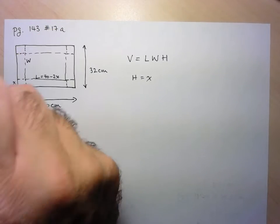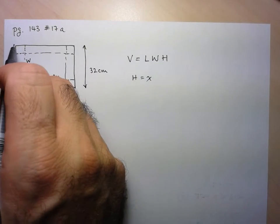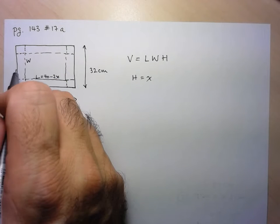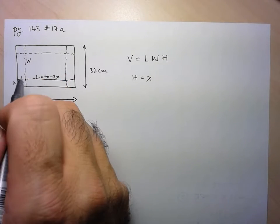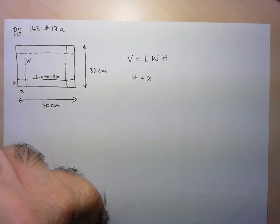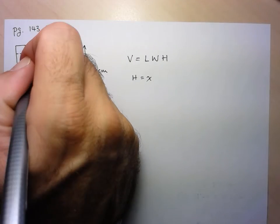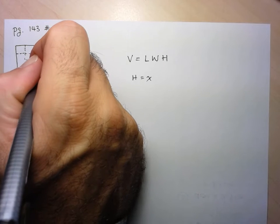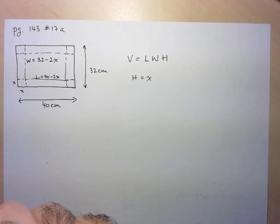And then for the width, which will be here, it's very similar, because I've got the total length of 32 centimeters, and I'm lifting up on either side those tabs of X centimeters each. So my width is just going to be 32 minus 2X. All right, and now I've got enough information to write my model for the volume of this box.